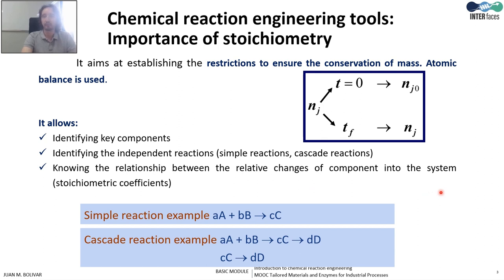Stoichiometry is a fundamental tool of chemical reaction engineering, and it is based on the conservation of mass. We use atomic balance, and it helps us to identify which are the key components of the reaction, how many independent biochemical reactions we have in the system, and to know the relative change between the components. With stoichiometry, we can write the chemical equation explaining what is taking place in our reactor — from a simple reaction like A plus B producing C, to a more complex cascade of series and parallel reactions.